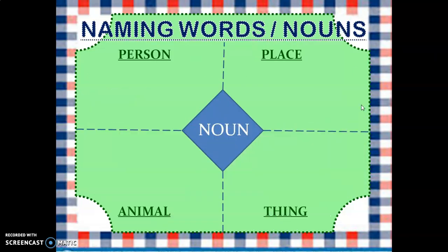Now let's do an activity. I will show you a few pictures here and you have to put that picture in the correct column. The columns are: person, place, animal, and thing.